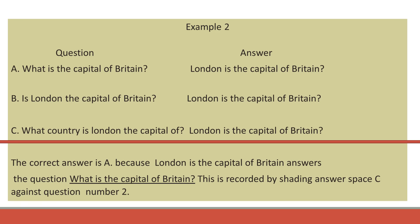Example 2. What is the capital of Britain? London is the capital of Britain. Is London the capital of Britain? London is the capital of Britain. What country is London the capital of? London is the capital of Britain. The correct answer is A because London is the capital of Britain answers the question What is the capital of Britain? This is recorded by shading answer space A against number 2.